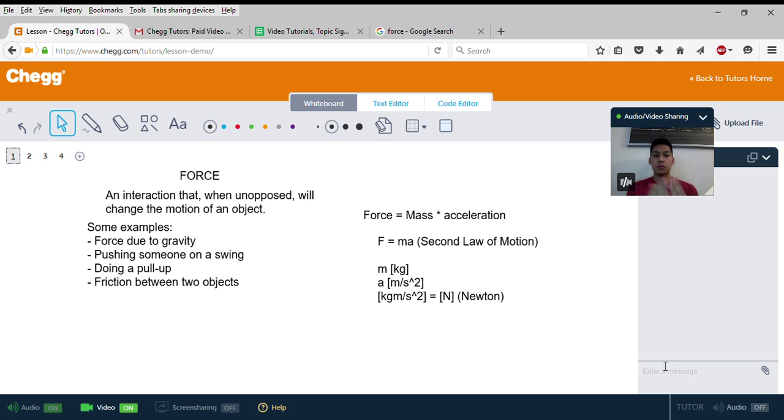Some examples you can think of would be the force due to gravity. Essentially, why this mouse falls is because there's gravity forcing this object down.